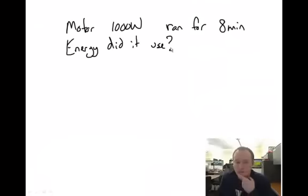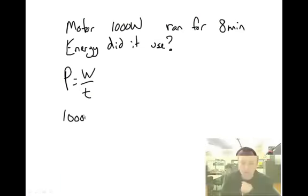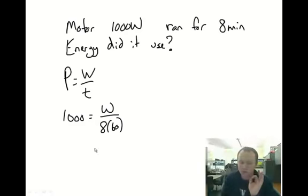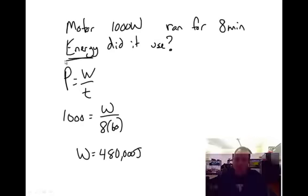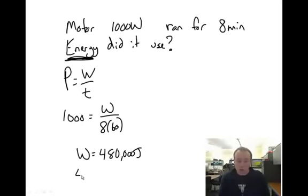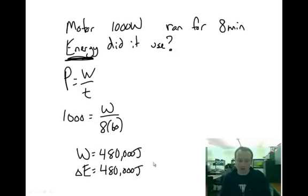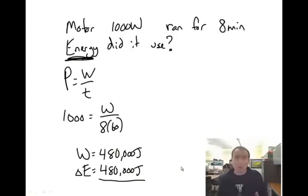One last problem. The motor is rated at 1,000 watts. It runs for 8 minutes. How much energy did it use? Power is work divided by time. The power rating is 1,000. The work, I don't know. The time is 8 minutes, but I've got to convert that into seconds. So the work done is 1,000 joules. So how much energy did it use? Work is change in energy. So how much energy did it convert during those 8 minutes? 480,000 joules. There you go. Have a good one.